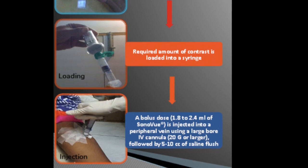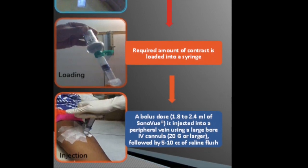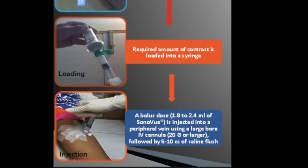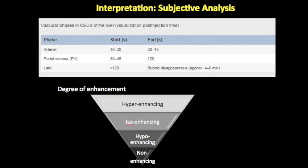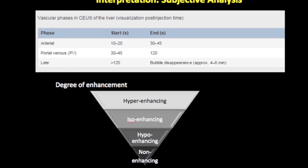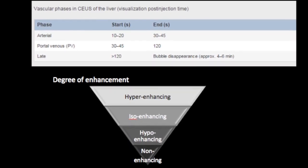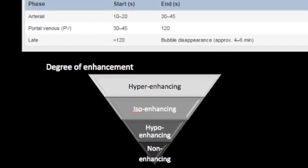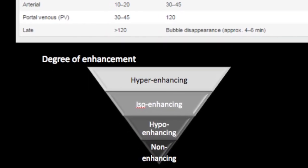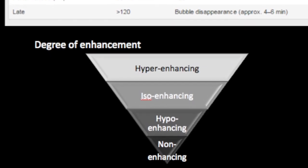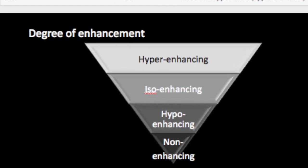What is readily available in India is Sonovue, and this is what we use for most of our applications. Similar to CT and MR, we need to study the contrast study in various phases — arterial, portal, and late phases — just as in a CT and MR study.